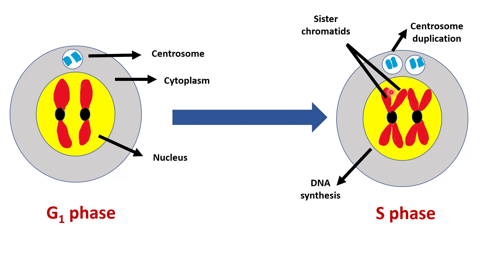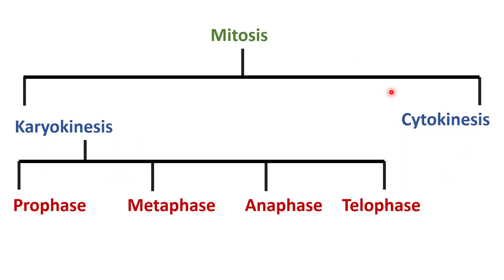After the completion of interphase, mitosis starts. Mitosis consists of two main steps: karyokinesis and cytokinesis. Karyokinesis is where nucleus division takes place, and cytokinesis is where cytoplasm division takes place — here one cell becomes two. Karyokinesis is again divided into four steps.